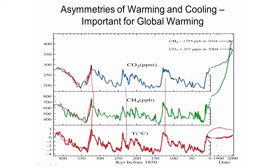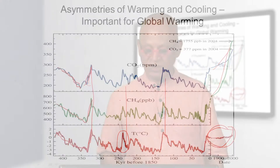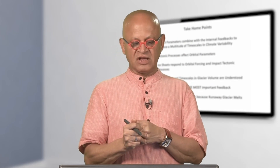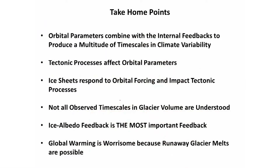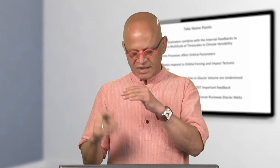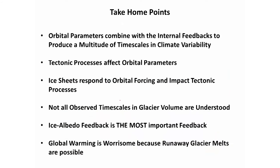In the global warming context, we are increasing CO2 and methane first and temperature is responding, whereas in the orbital case temperature changed first, glaciers responded, then CO2 and methane responded. These asymmetries must be understood. The take-home points from orbital time scale climate change: orbital parameters — precession, obliquity, and ellipticity — are well-defined, but ellipticity-modulated precession can combine with other cycles to produce multiple time scales. Internal feedbacks produce additional time scales, and there are still many unknown factors — the science is still advancing as to why some observed time scales exist.